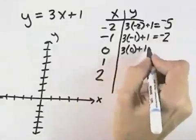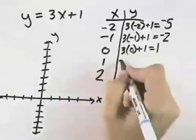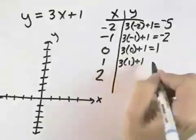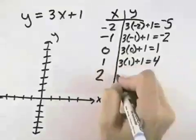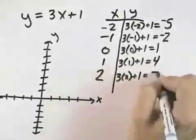Continuing, 3 times 0 plus 1 will give us 1. 3 times 1 plus 1 is 3 plus 1, or 4. And finally, 3 times 2 plus 1 is 6 plus 1, or 7.